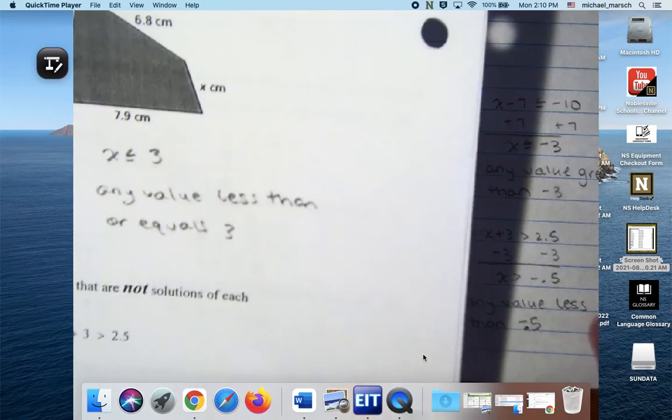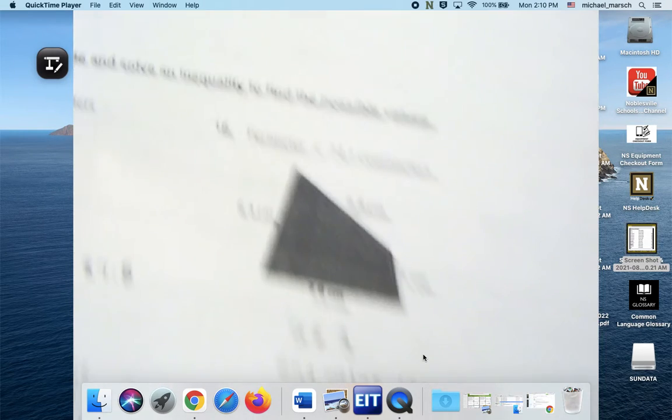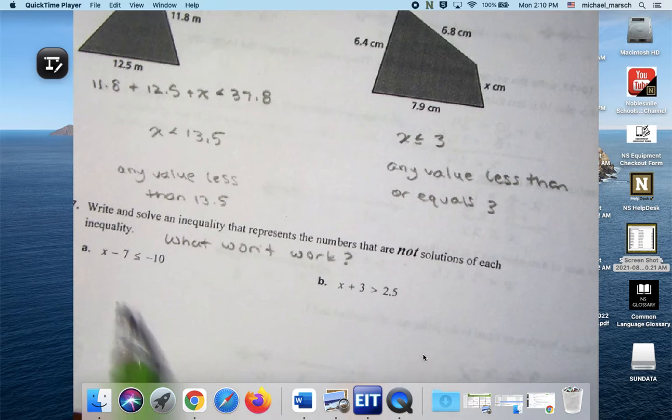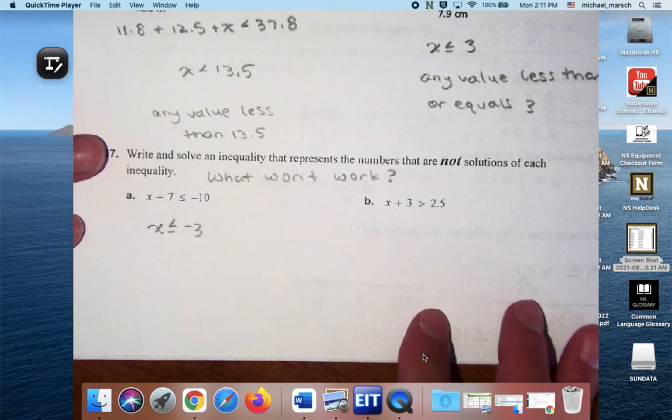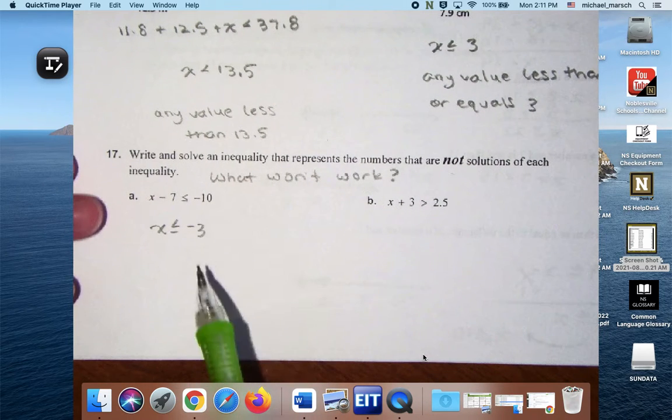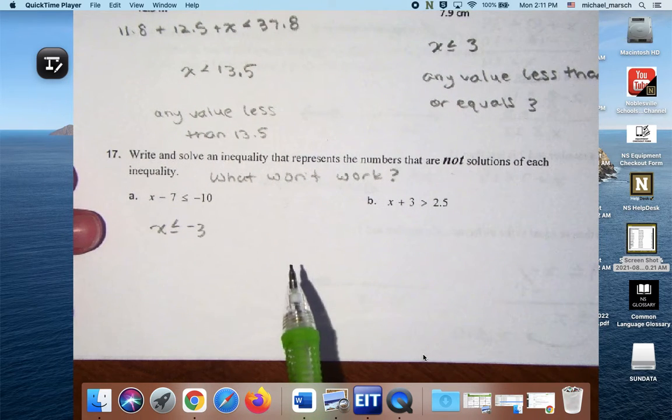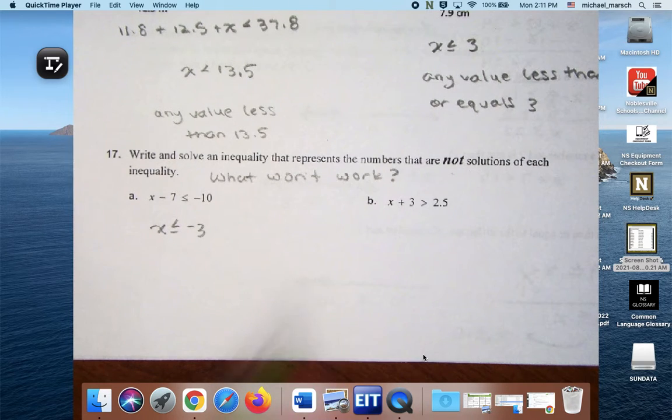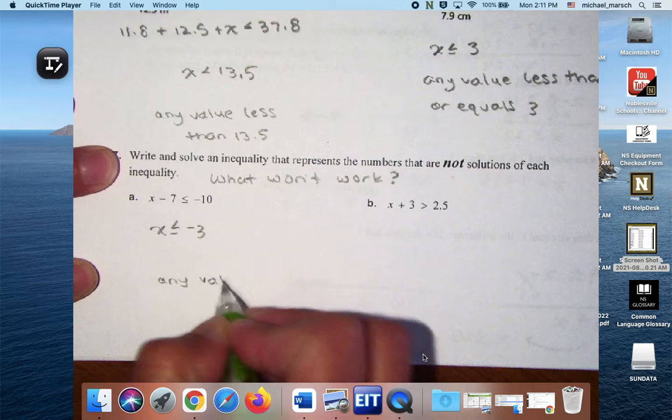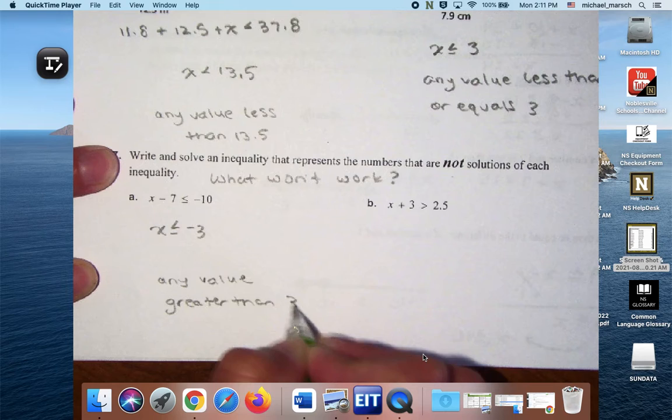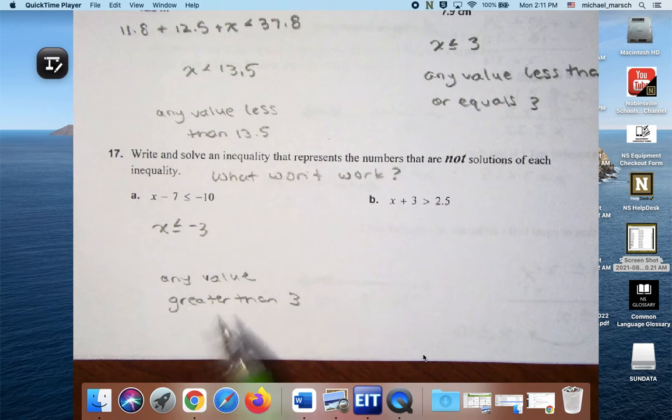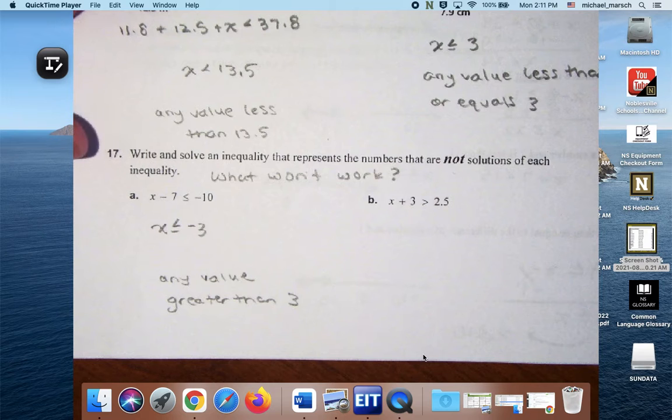And then for number 17, when you work this out, you end up with X is less than or equal to negative 3. So values that would not work would be anything greater than negative 3. Can it be 3? The answer could be negative 3, so a non-answer couldn't be negative 3. This is very confusing. We could talk ourselves in circles about this.